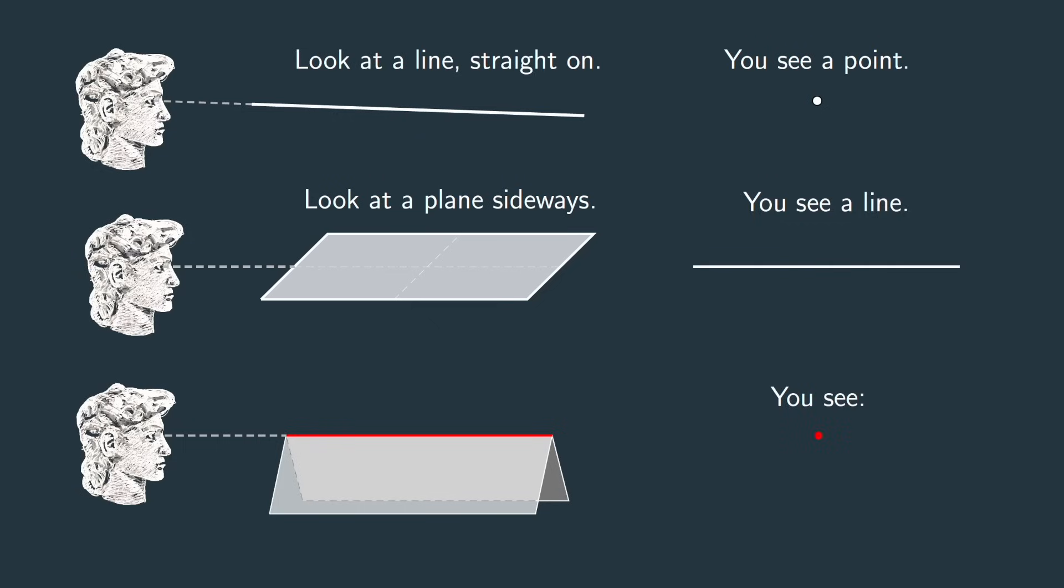The red line appears as a point. You're looking at both of those planes sideways so they appear as straight lines that meet that point.